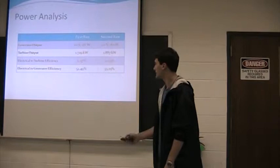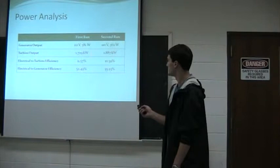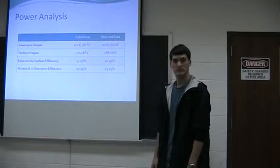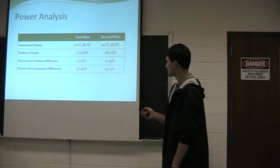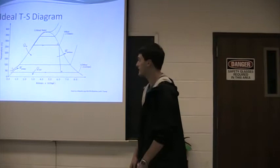So I kind of got two efficiencies here. The electrical turbine efficiency, the 200 watt load to the turbine 1,729, came out around 11 and a half percent. And then I did the same thing for the second run. With the electrical generator, I did 200 watts trying to create and it came out with everything. So here's the ideal TS diagram.